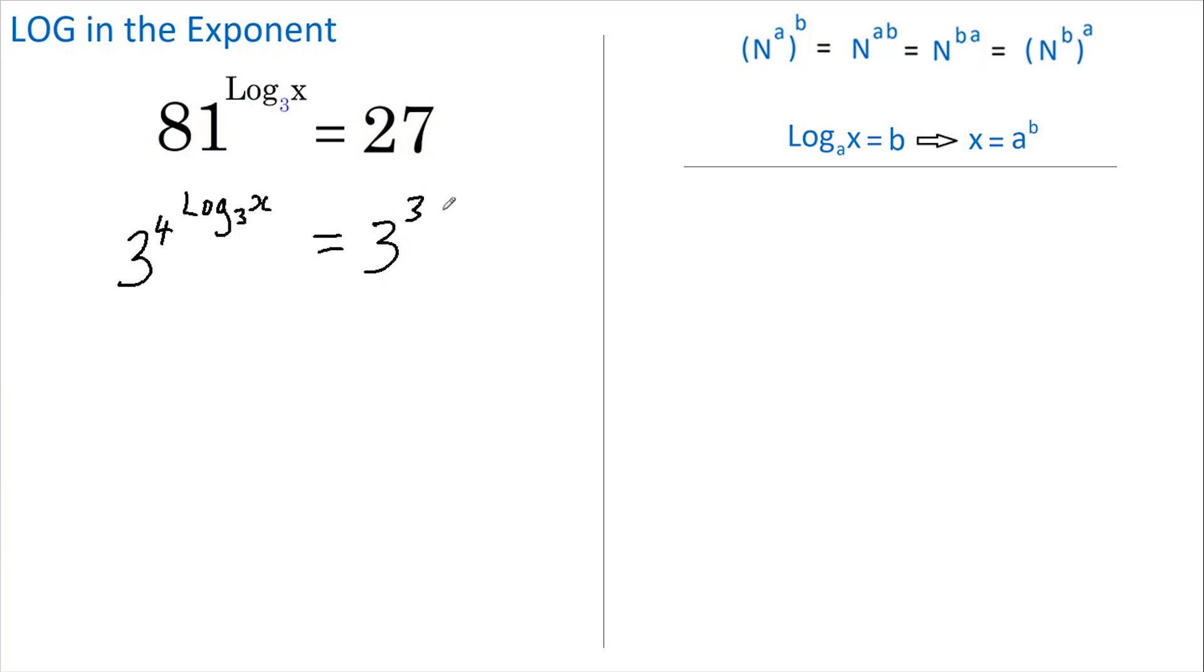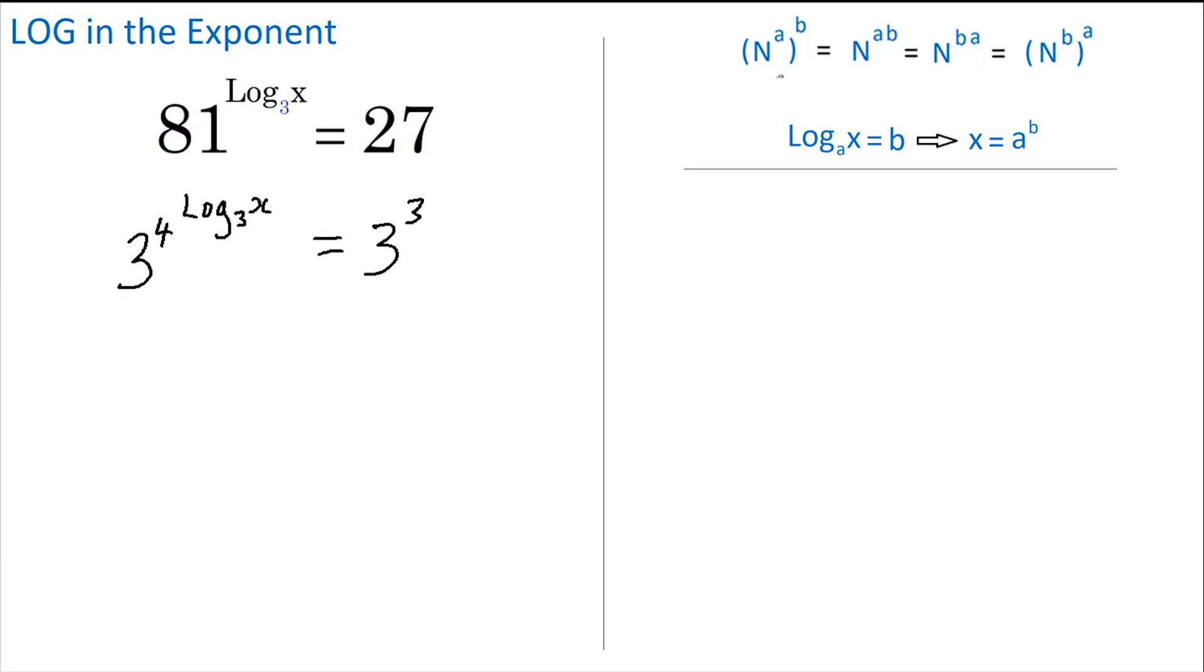This rule here states if we have a number raised to a power and that's all raised to another power, then we can write that as the number raised to the powers multiplied together. So this becomes 3 to the power of 4 times log base 3 of x.